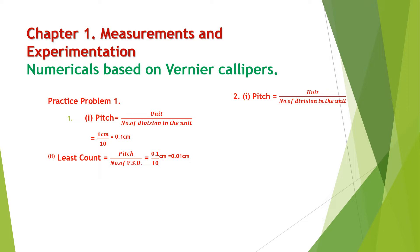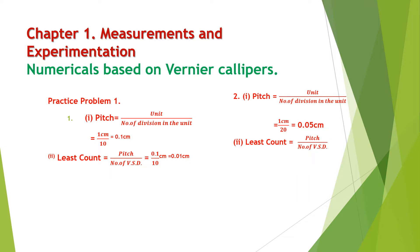For the second case, pitch is again unit over number of divisions in the unit. The unit is one centimeter and the number of divisions is 20, so pitch comes to be 0.05 centimeter. The least count is pitch over number of vernier scale divisions, which is 0.05 centimeter over 20, giving 0.0025 centimeter.